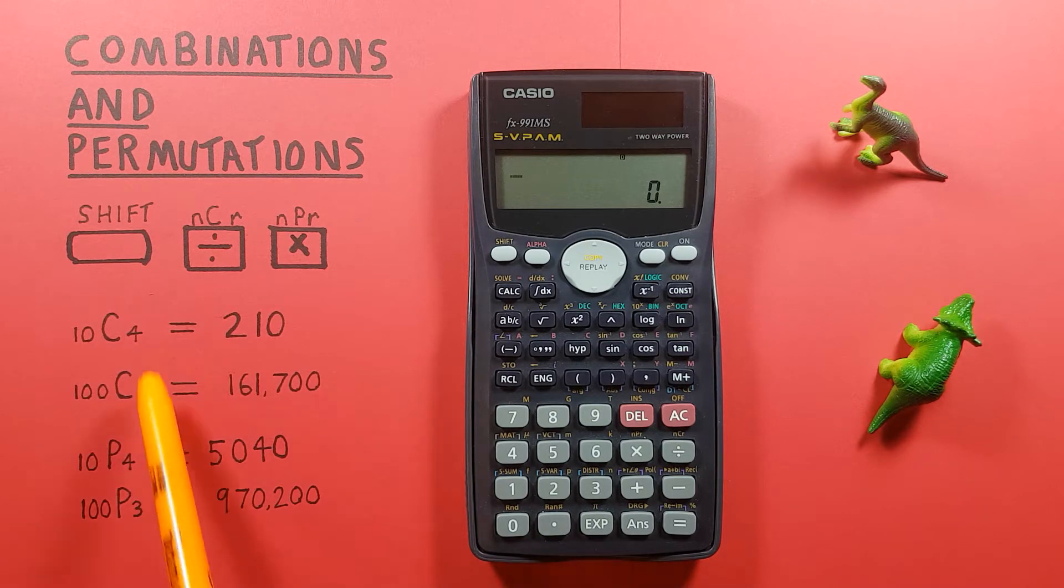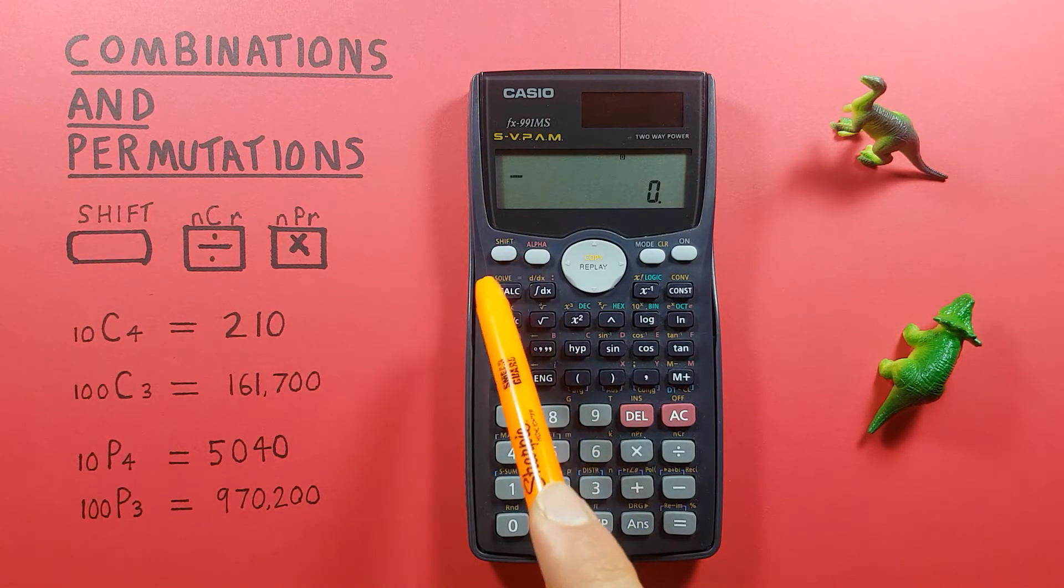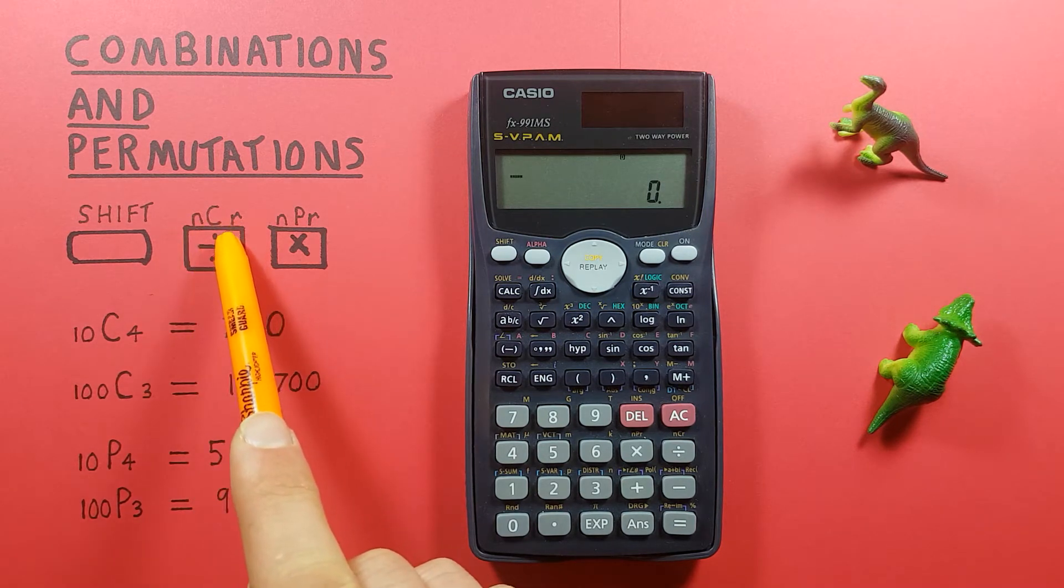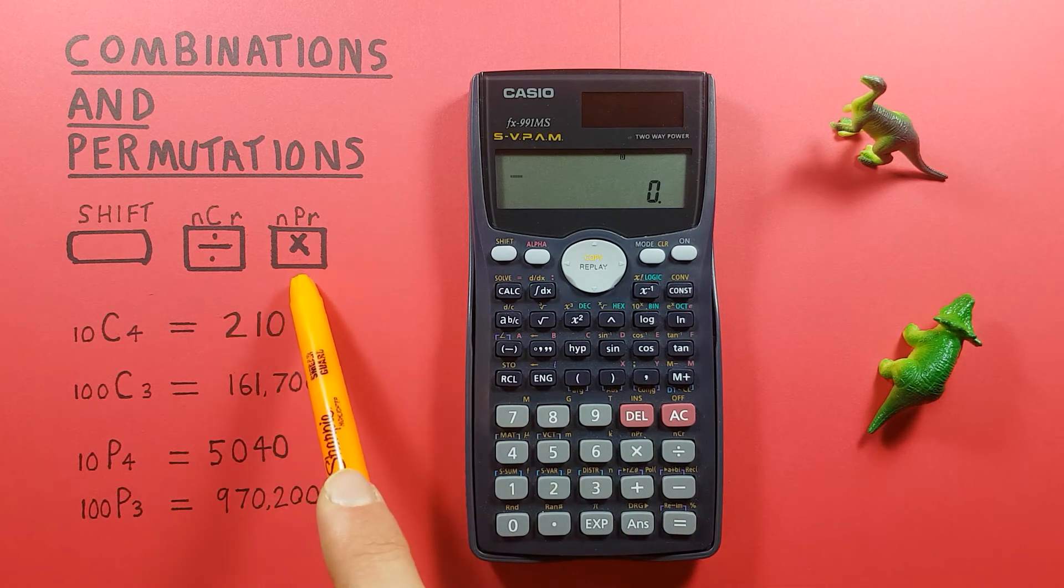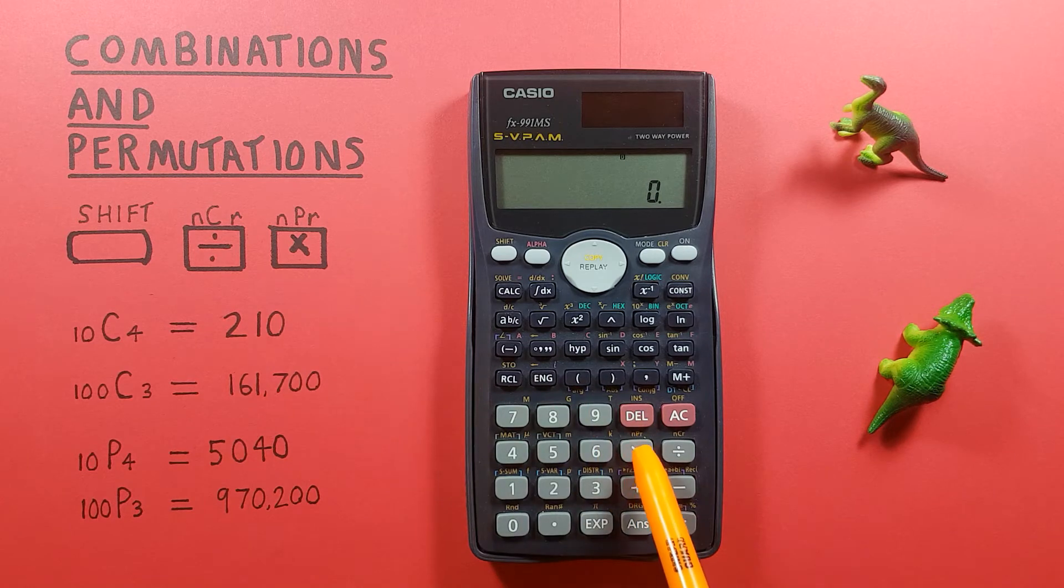To do this we'll be using the shift key, located here in the top left. The division key which has a shift function of combination, located here, and the multiplication key which has a shift function of permutation, located here.